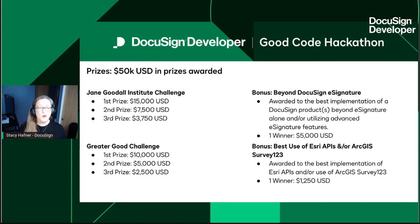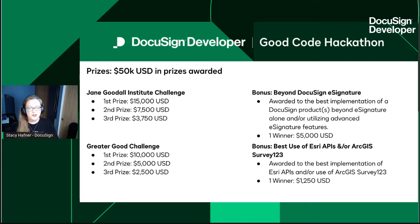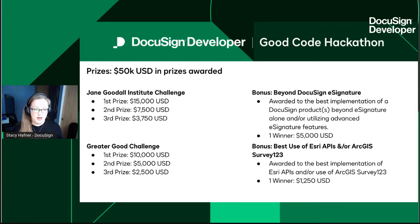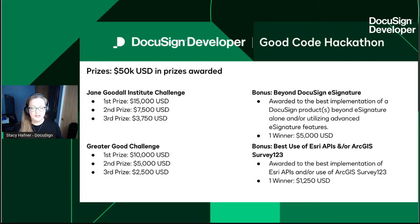Let's go through our prizes, because that's really important. We have $50,000 total prizes to be awarded. Our first place prize is $15,000 for the Jane Goodall Institute challenge — that is more than our Greater Good Challenge because we want you to focus on that one. We also have bonus prizes. There's a Beyond DocuSign e-signature bonus where if you didn't win first through third, you can win a bonus prize for best use of DocuSign. If you are a first through third winner, you can also get a bonus bump for another $5,000. We also have a bonus prize for best use of Esri APIs and/or ArcGIS Survey123, worth another $1,250. So pay close attention to this live stream.